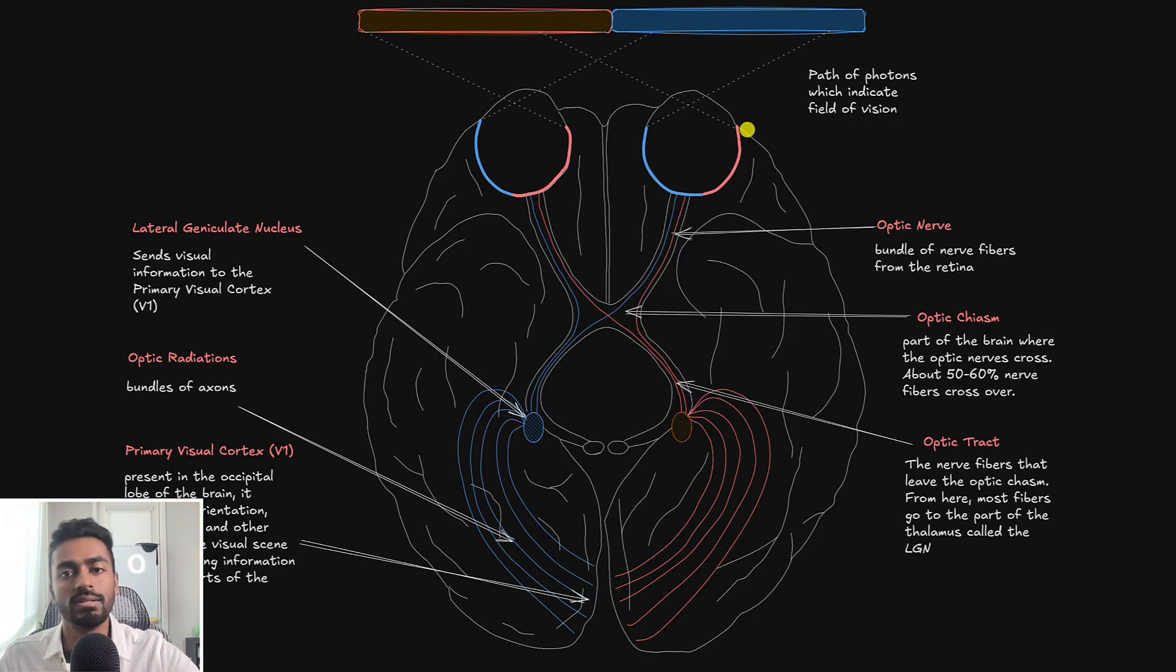And what's really cool here is that now the nasal side or the retinal ganglion cells that come from the nasal side of the retina are going to be crossing over onto the opposite side of the brain. And the point at which they cross over is known as the optic chiasm. And roughly we will see about 50 to 60% of the nerve fibers cross over to the other or opposite side of the brain.